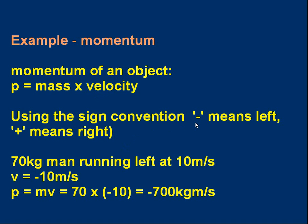Let's stick with the same sign convention we just mentioned. Negative values means left, positive means right. Take a 70 kilogram man running to the left at this speed, 10 meters per second. First of all, we can say the velocity is minus 10 meters per second. The minus tells us he's running to the left and the 10 meters per second is the magnitude, the speed.